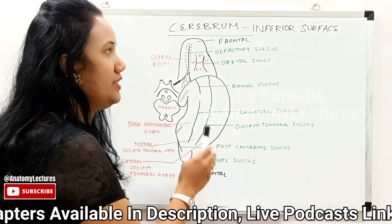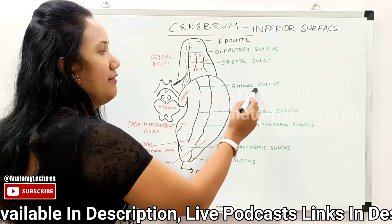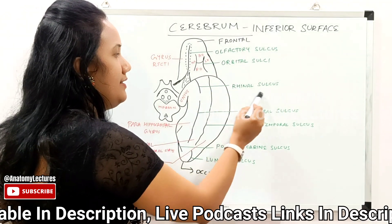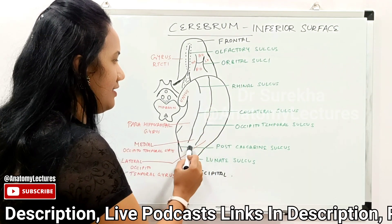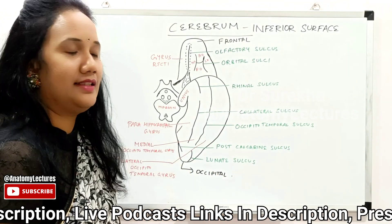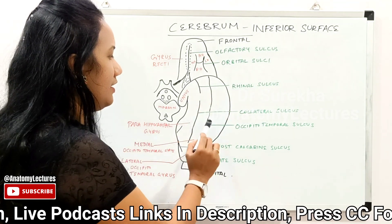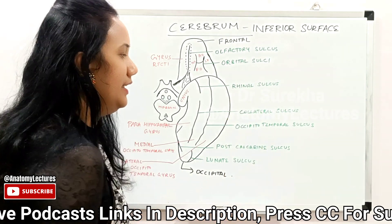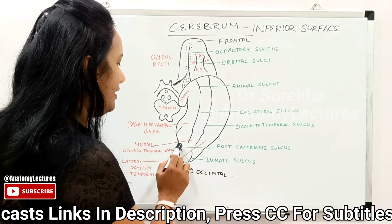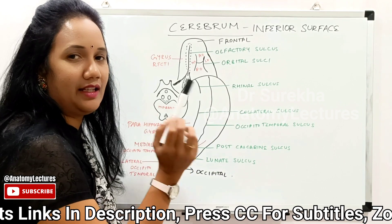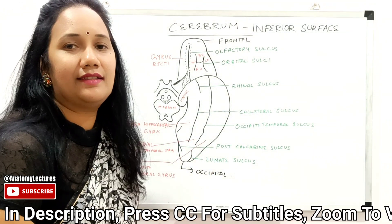The major sulci and gyri seen in this tentorial part are: anteriorly, near the uncus, you see a rhinal sulcus — a small sulcus called the rhinal sulcus. Posteriorly, the extension of this rhinal sulcus is called the collateral sulcus. Another sulcus which divides the remaining part of the tentorial surface is the occipitotemporal sulcus. Other sulci seen on this inferior surface are the post-calcarine sulcus, which is the extension of the calcarine sulcus, and the beginning of the lunate sulcus.